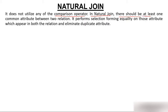In natural join there must be at least one common attribute between two relations. If you are applying a natural join between two tables, you must have at least one common column. For example, if there is a student table and a course table, both must share a common column like roll number.